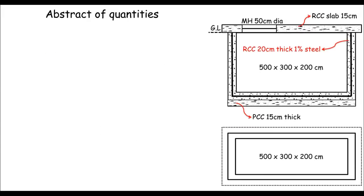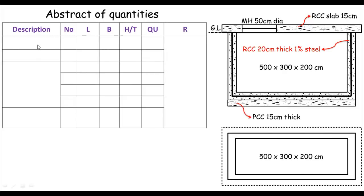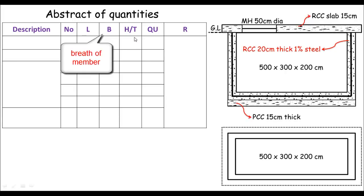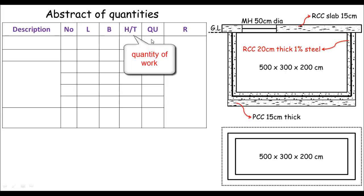The solution will be done in a table. The first column represents the description of members or materials. The next column represents the number of members, then length, breadth, and height. When we multiply these four columns — number, length, breadth, and height — we get the quantity (column Q). The last column represents remarks where we do rough calculations. Now let's start the calculation.